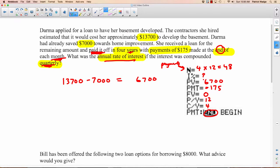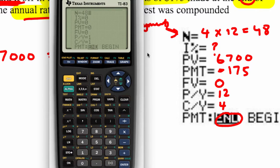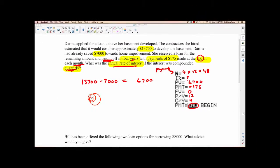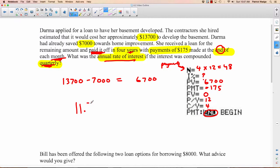Let's enter that information in. N is 48. I, we don't know. Present value is $6,700. The payment is negative $175. Future value is zero. Payments per year is 12. Compounding per year is 4. We go back up to interest because that's what we want to find, and we hit alpha, enter. You're going to get 11.67. Why don't we round that to 11.7%. That's the annual rate of interest.